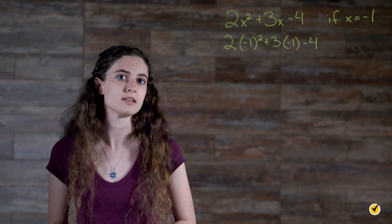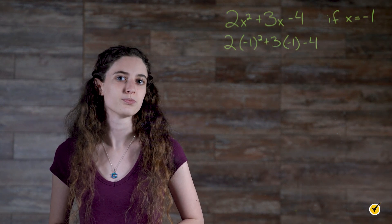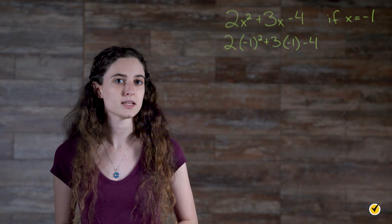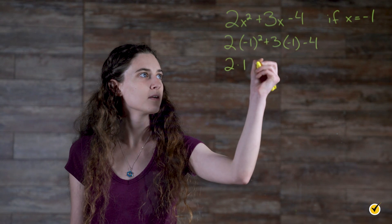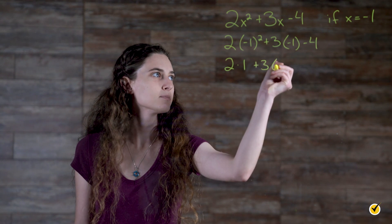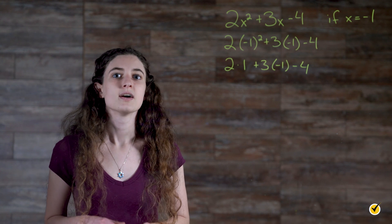Now, because the exponent 2 is outside of the parentheses, we're going to square the value contained in the parentheses first. Then multiply the result by our coefficient 2. The square of negative 1 is positive 1, which gives us 2 times 1 plus 3 times negative 1 minus 4.